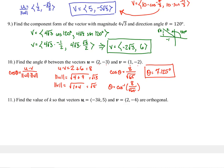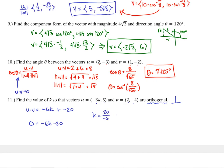Number eleven: find the value of k so that the two vectors are orthogonal — meaning perpendicular with a 90-degree angle between them. The cosine equals zero when the dot product is zero. So u dot v equals negative 6k plus vertical times vertical equals negative 6k minus 20. Setting that equal to zero, adding 20 and dividing by negative 6 gives k equals negative 10 thirds.